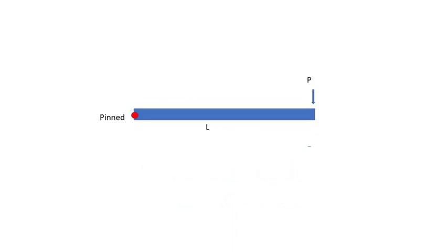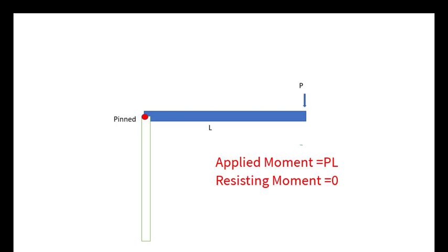So now if we assign the end support as a pin the structure becomes unstable. That's because the resisting moment this time is zero and it is unable to counter the applied moment. Now that's very simple.